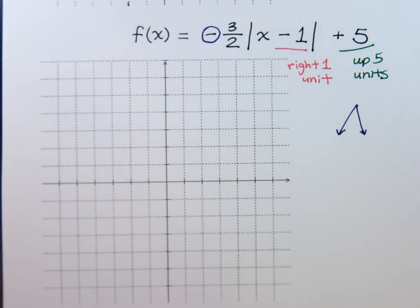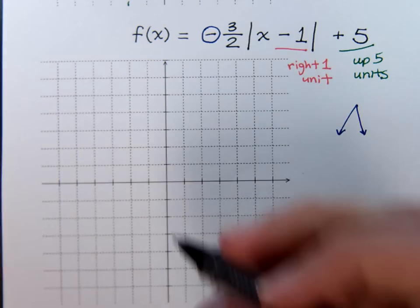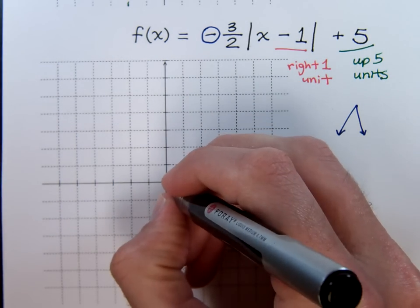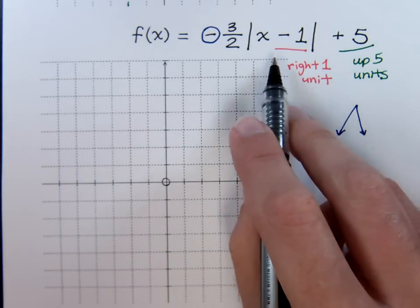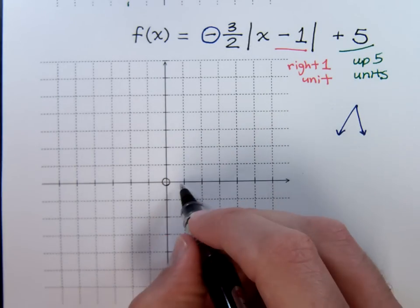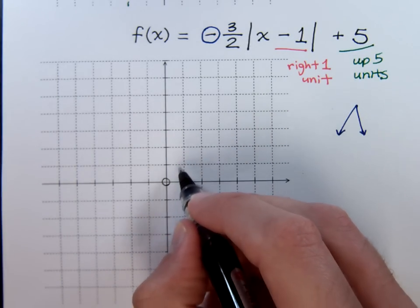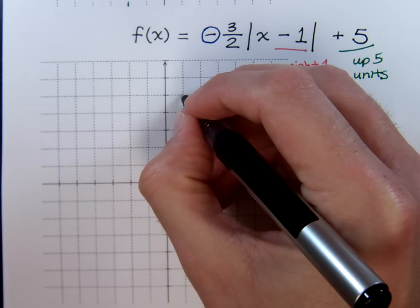The first thing we want to do is we want to plot our vertex. Remember that our vertex would normally start here at the origin. But according to what I have here, it says I need to go to the right one unit and then go up five units. So my vertex is actually going to be here.